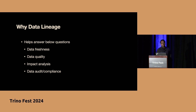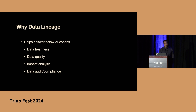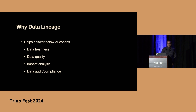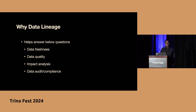Security and compliance are pretty key initiatives nowadays, and without data lineage it's very difficult to track and make sure that your data is following compliance standards. For example, take PII data — how do you know that your PII data is getting leaked? Without data lineage, it is pretty hard to do that.